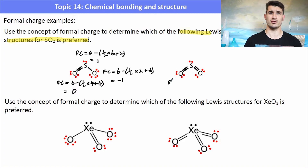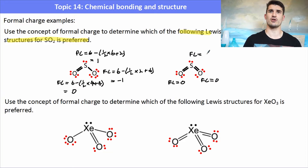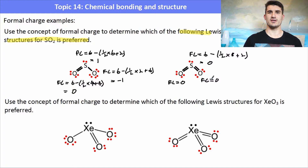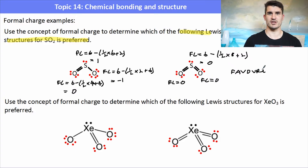So for the first SO2 structure we have formal charges of zero, one, and negative one — not quite zero, but it's pretty good because oxygen is more electronegative than sulfur. In the other example, we have two oxygens with a formal charge of zero and the sulfur also has a formal charge of zero. Because all of those have a formal charge of zero, the diagram on the left would be the most favored. So SO2 has the bent configuration with one lone pair sticking out the top.